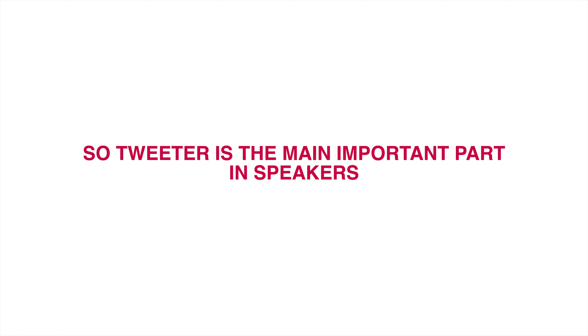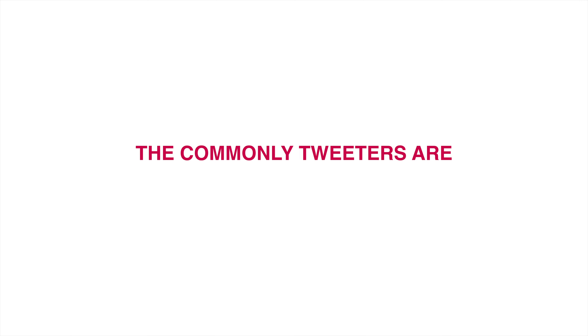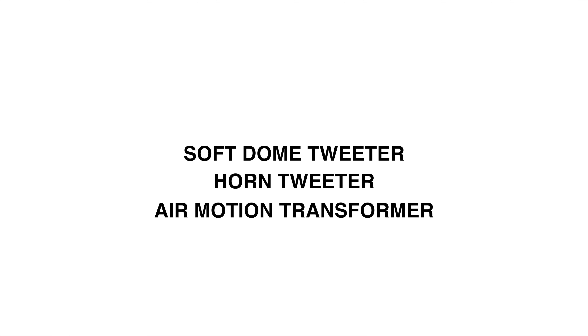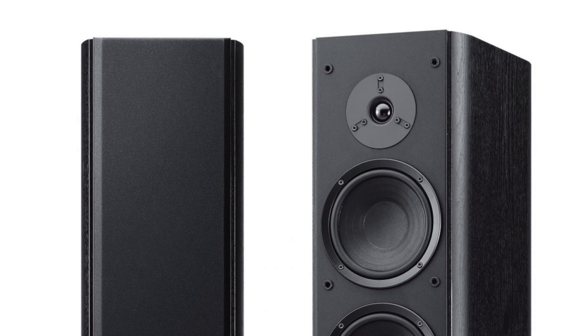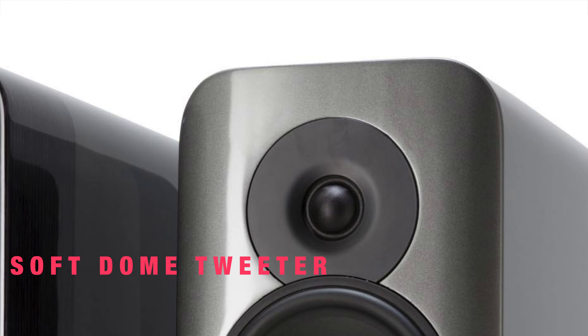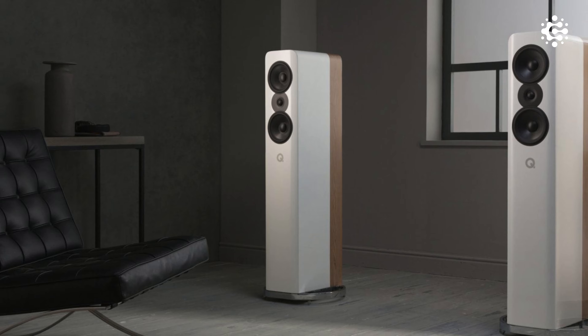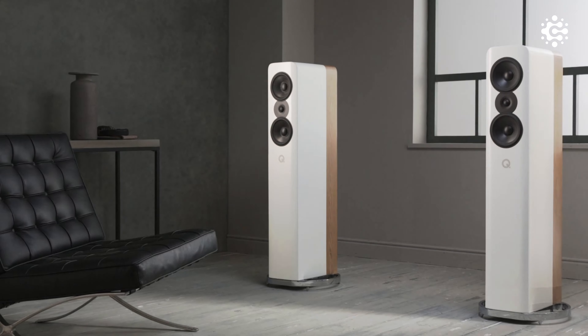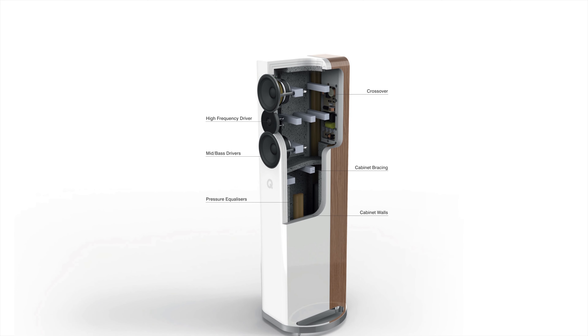Tweeters are a very important part of speakers. Commonly, tweeters are soft dome, horn tweeter, or air motion transformer. Soft dome tweeters offer the most priced performance — they produce smooth treble response and are found in almost all everyday speakers. You can choose the material composition to match your preferred sound signature. The horn tweeter is generally made of metal and uses a waveguide section, which helps sound disperse. This tweeter tends to be treble-heavy, making it a good option for high-frequency detail.